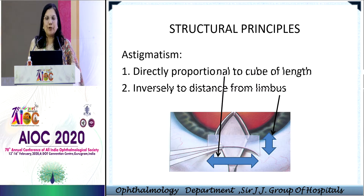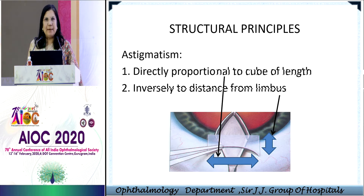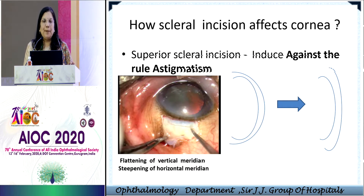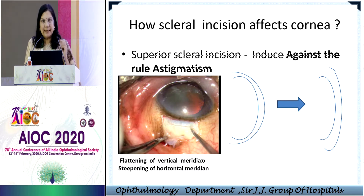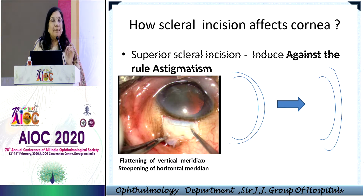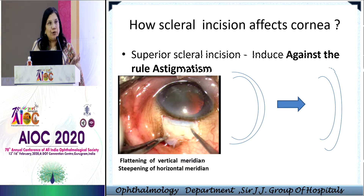Astigmatism is directly proportional to the length of the tunnel and inversely proportional to the distance from the limbus. What it means is that if you are far away from the limbus, the astigmatism is less, and if the length of the tunnel is small, the astigmatism will be more. A superior scleral incision will induce astigmatism against the rule. When we do phaco in a corneal tunnel, there is less astigmatism, but inherent to the scleral tunnel — inherent to the SICS technique — there will be some amount of astigmatism. People have advocated SICS with a rigid IOL through a corneal tunnel, but any corneal tunnel greater than 3 millimeters is not safe with regards to astigmatism and endophthalmitis.